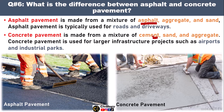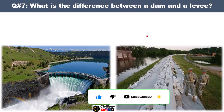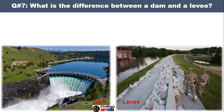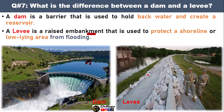Question number seven: what is the difference between a dam and a levee? A dam is a barrier that is used to hold back water and create a reservoir. Whereas a levee is a raised embankment that is used to protect a shoreline or a low-lying area from flooding. The pictures clearly depict the difference between these two terms.